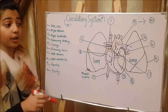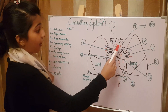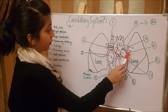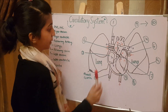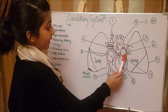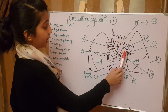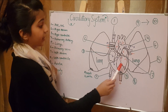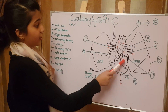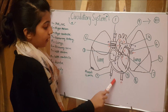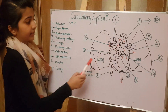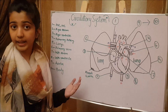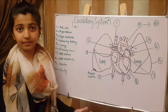The blood then returns to the left side of the heart via the pulmonary veins — four of them. Now in the left atrium, through the mitral valve, the blood enters the left ventricle, from which it travels to the aorta. From there, the oxygenated blood is transported to the rest of the body, and the process starts all over again.